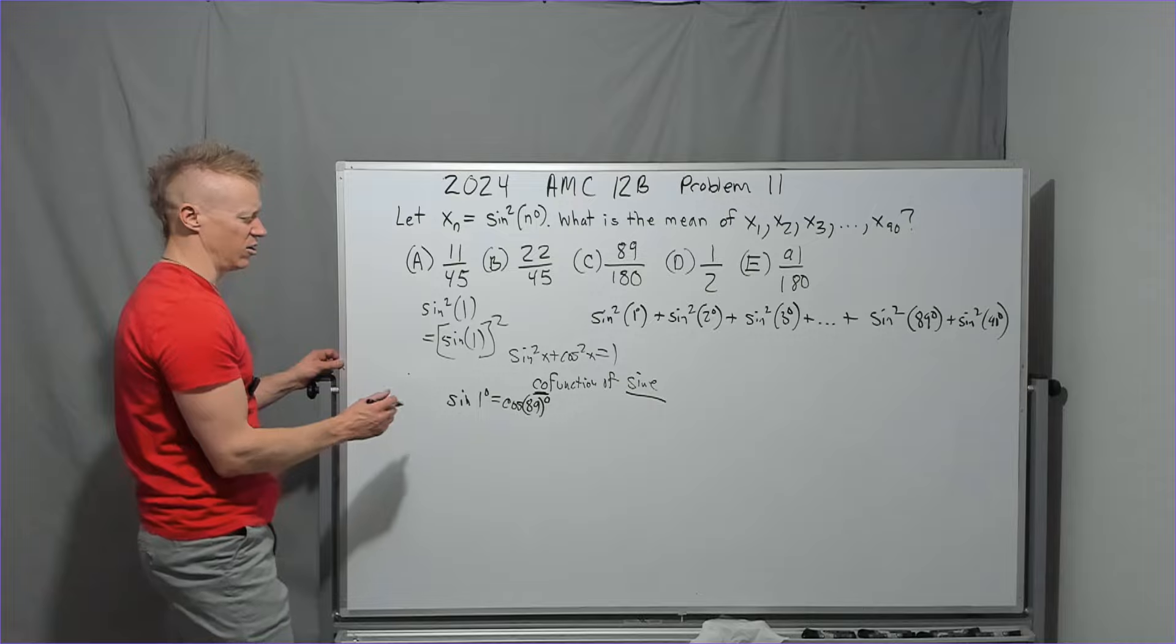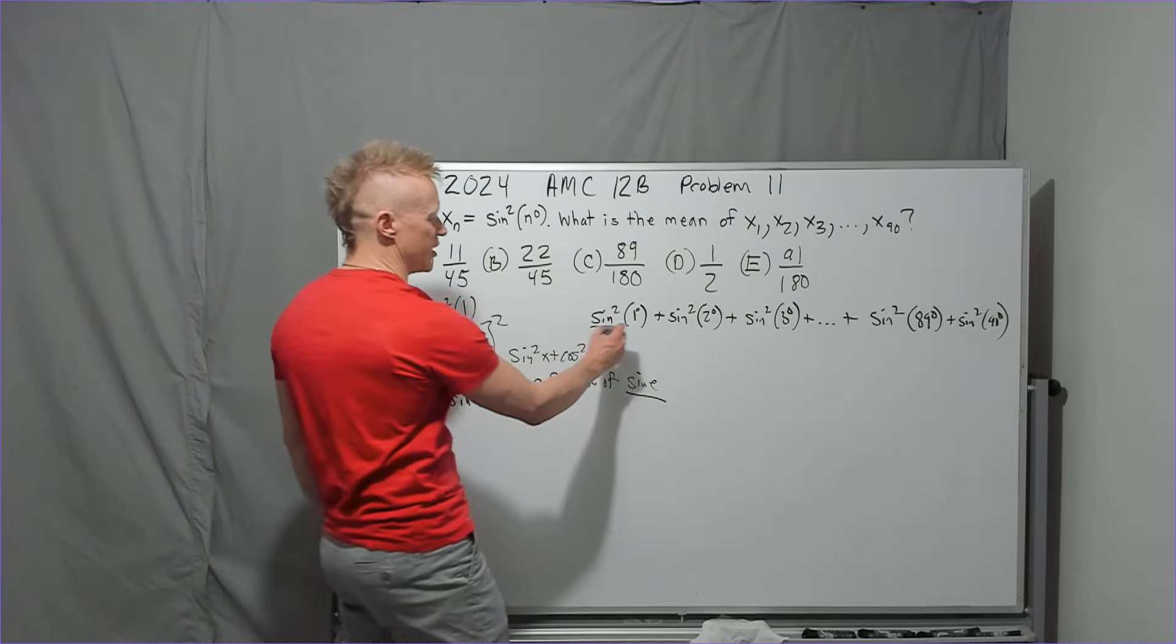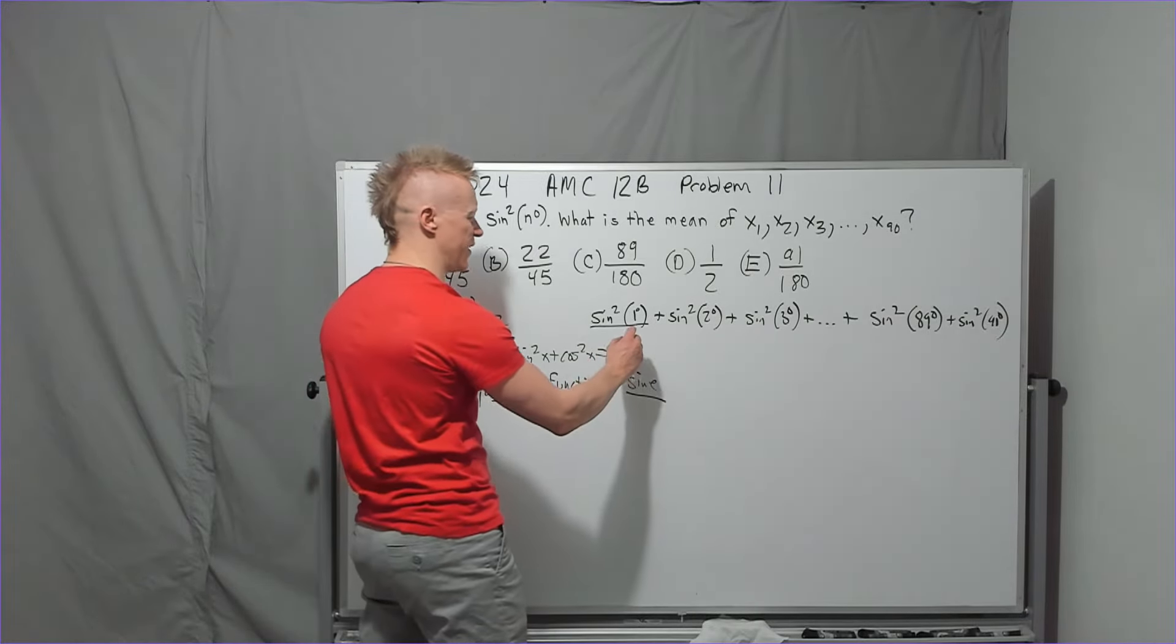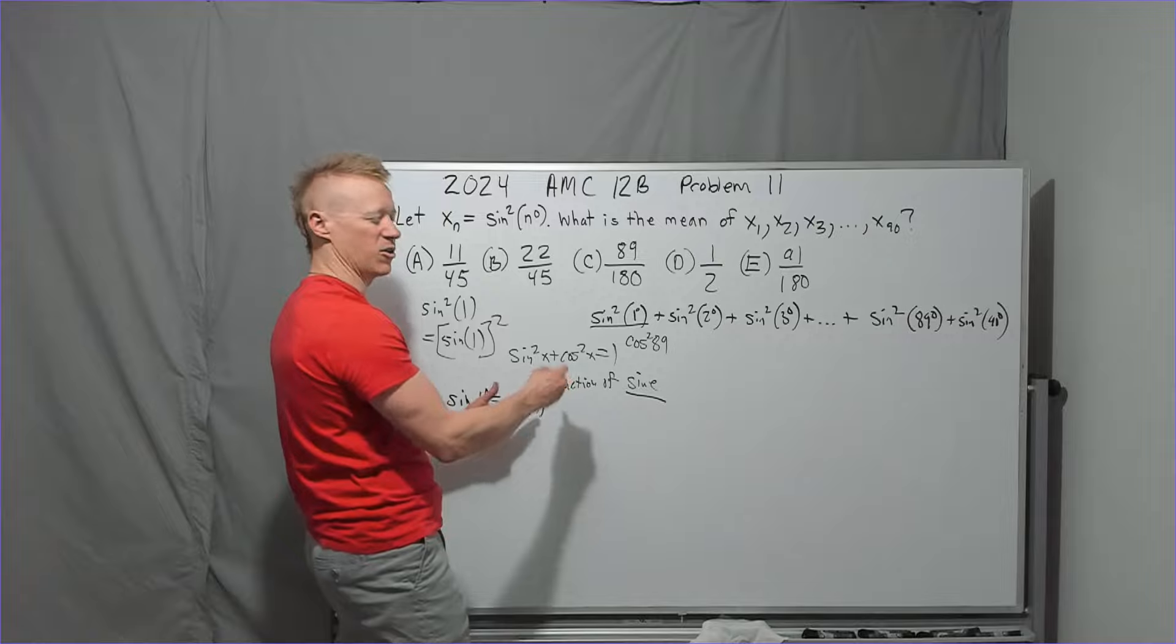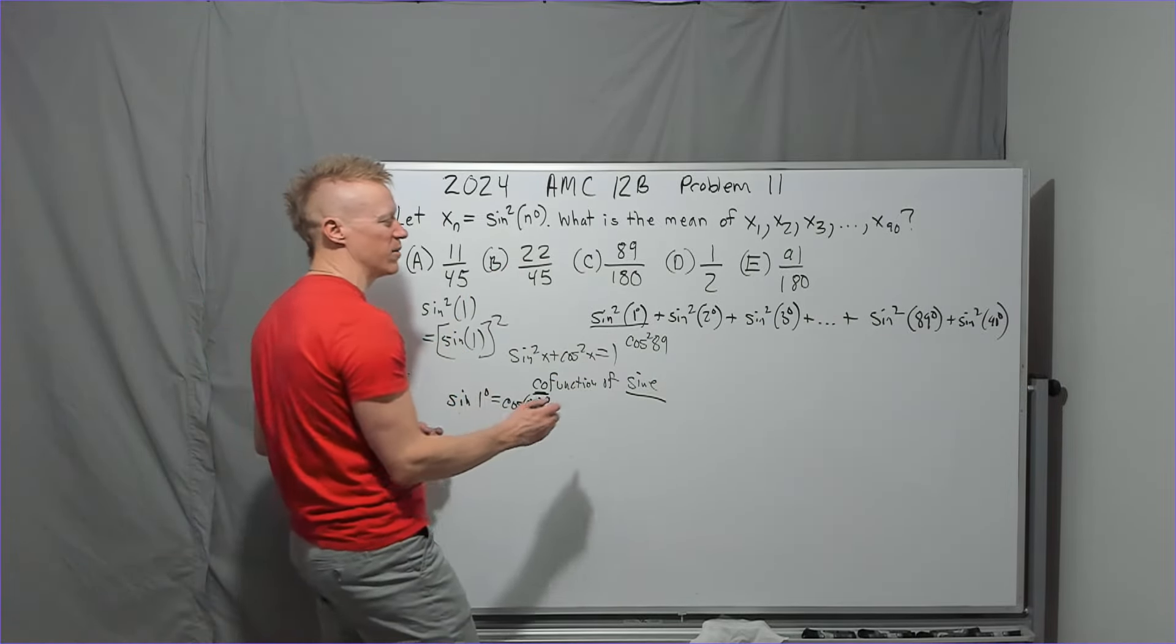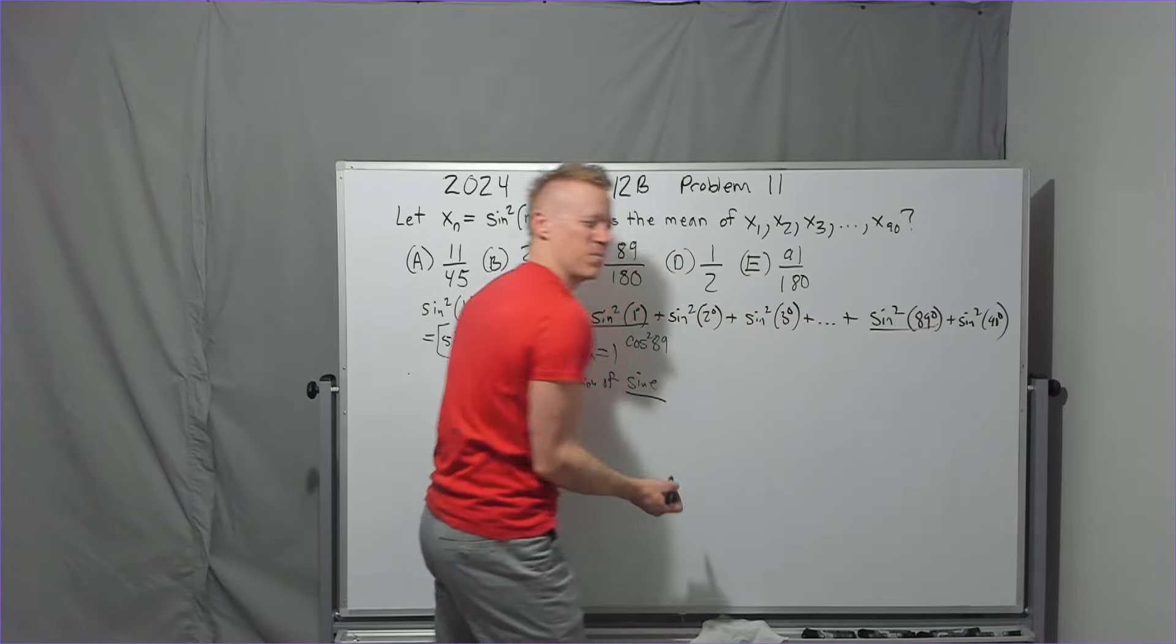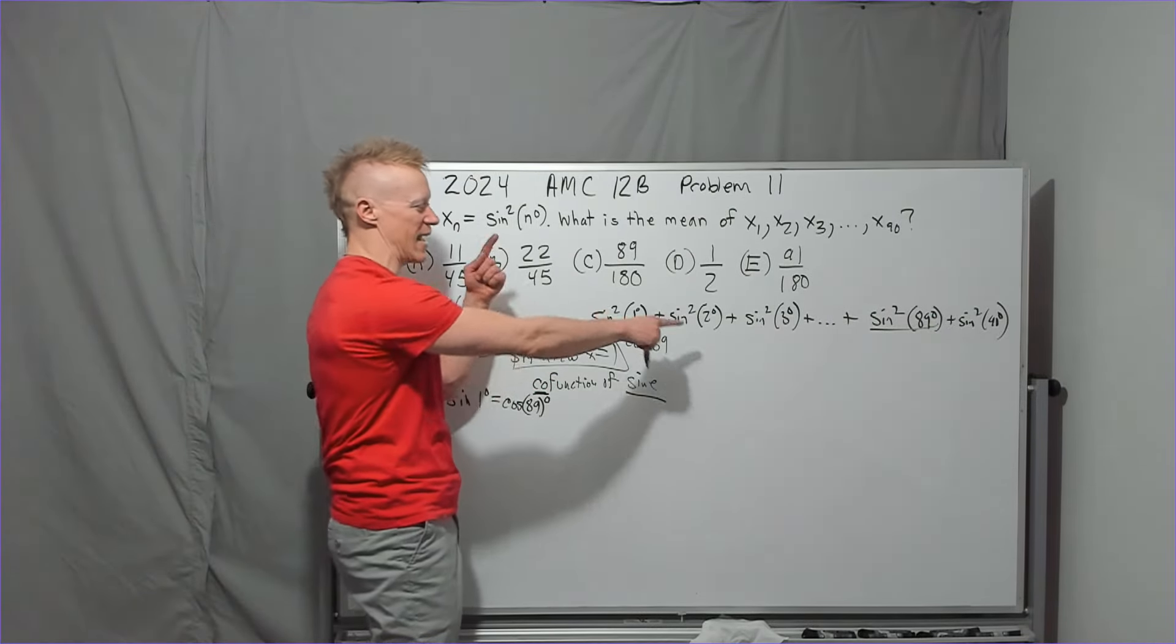Okay, so if sine of 1 degree is cosine of 89, oh, what if I change this to the cosine squared of 89, which is the cosine of 89 whole thing squared, but just put the squared back like we would before. That looks like it would match up with that and give us this thing that gives us 1, and we can do that all day long.